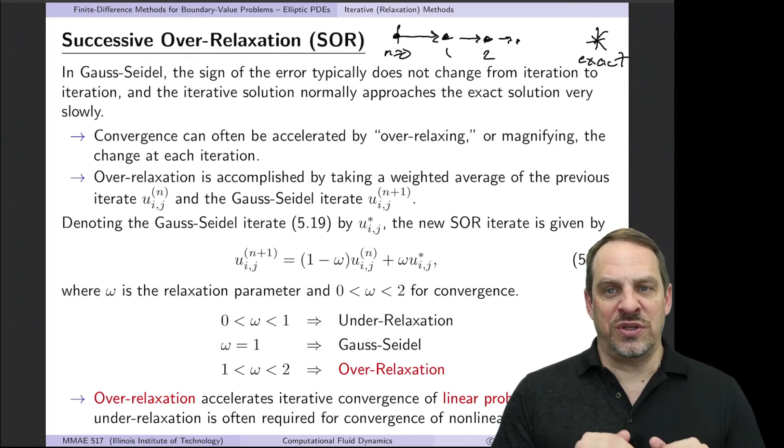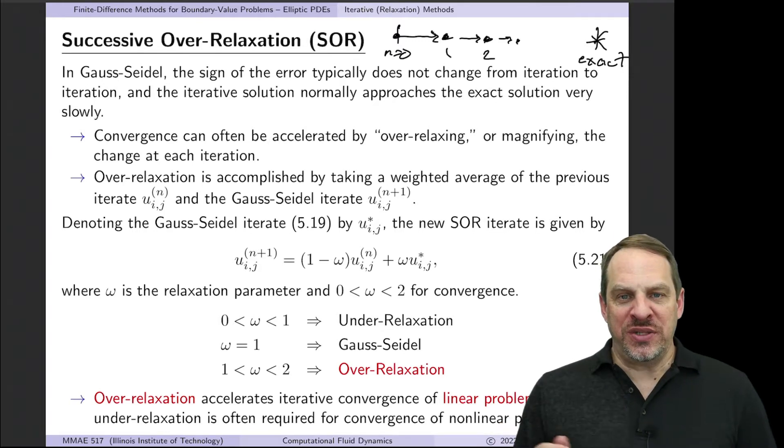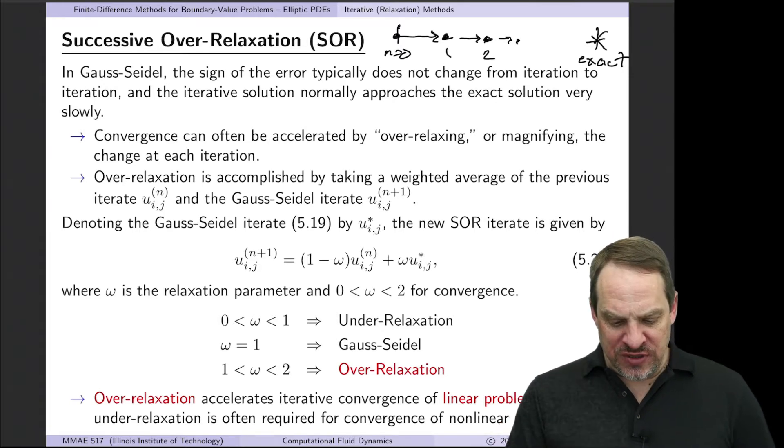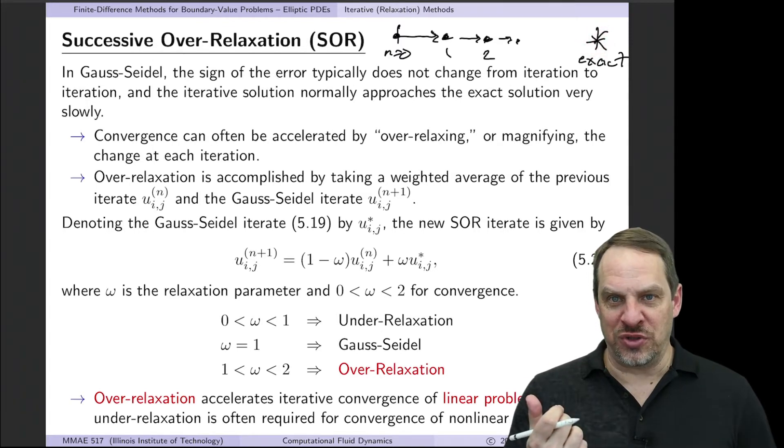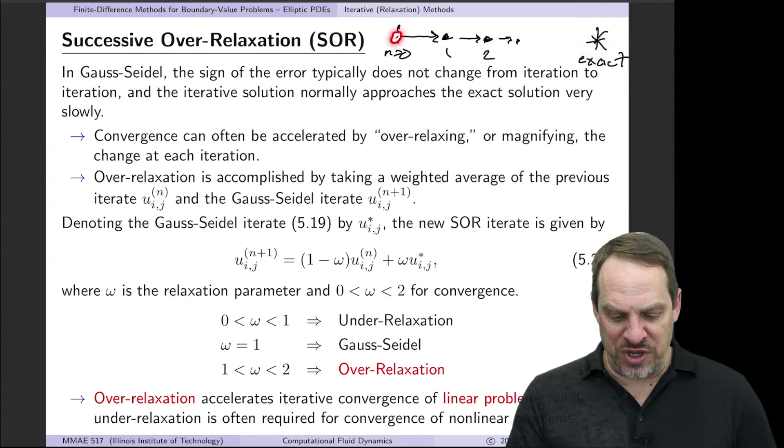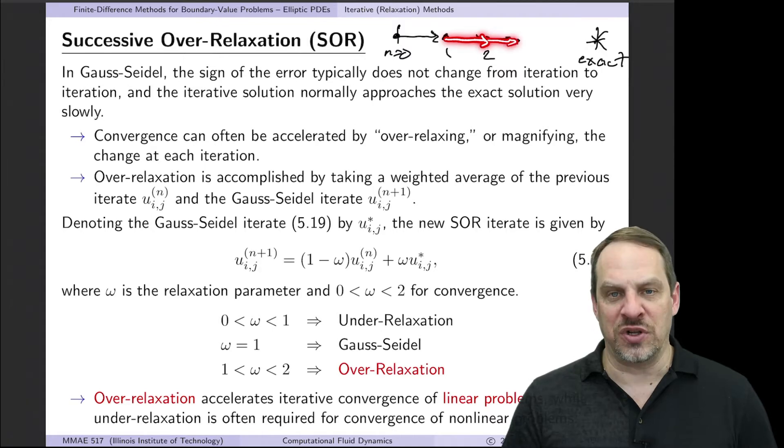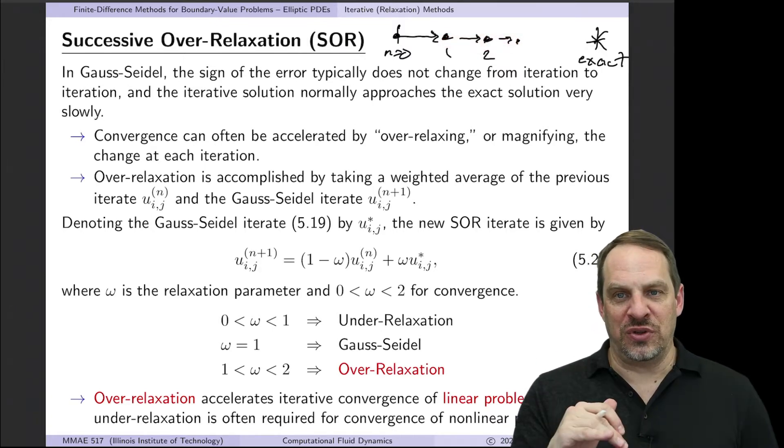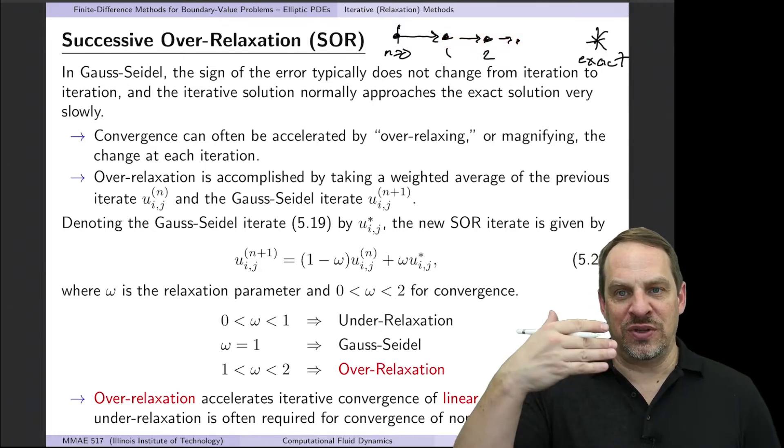What I want to show you in this video is another method that can accelerate the Gauss-Seidel method even more, and that's called successive over-relaxation, or SOR. It's based on an observation. If I have the exact solution over here somewhere, I normally don't know that ahead of time, but if I start out with my initial guess, the first iteration will move me closer to the exact solution, second iteration will get me closer, third iteration even closer.